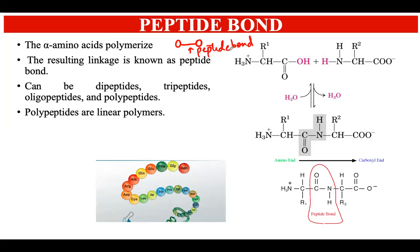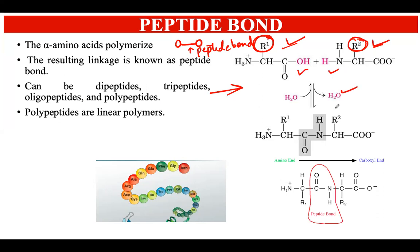If someone asks what bond is present between different amino acids in a protein, the answer is a peptide bond. In this reaction, amino acid one and amino acid two have the same general structure — the only difference is the R group: R1 in the first and R2 in the second. When these two amino acids join together, a condensation process takes place, a water molecule is released, and a C-O-N-H bond is formed. This bond, formed by the linkage of carbon and nitrogen, is the peptide bond.